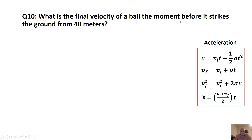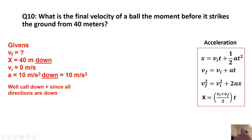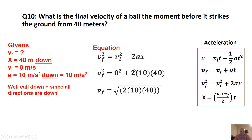Problem 4: what is the final velocity of a ball the moment before it strikes the ground, dropped from 40 meters? Givens: VF is unknown; X equals 40 m down; VI equals 0; A equals 10 m/s² down. With two downs and no ups, call down positive. We pick the equation with VF, VI, X, and A but not T: VF² equals VI² plus 2AX. Plug in values and take the square root of both sides to get VF, not VF². The answer is 28.3 meters per second.